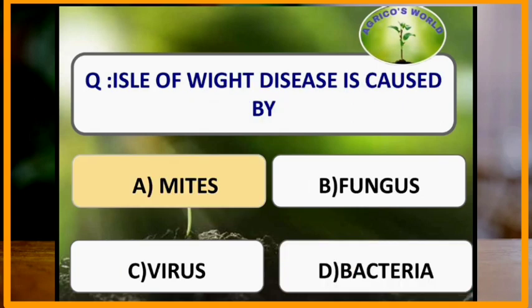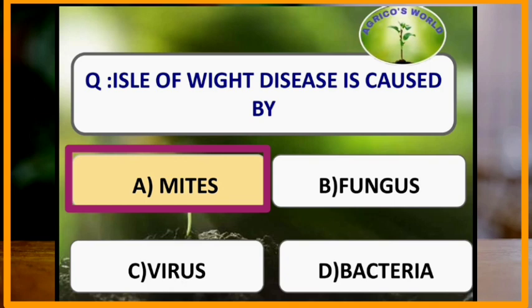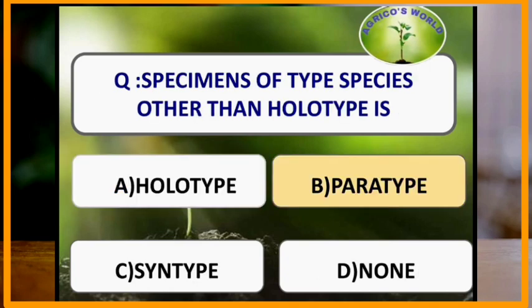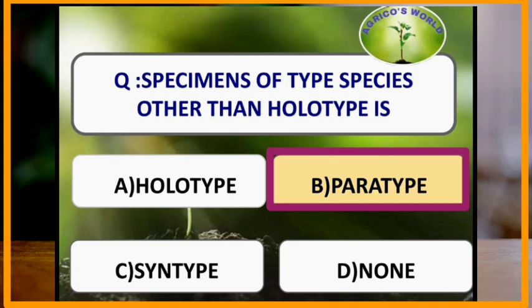Isil of white disease is caused by mites. Specimens of a type series other than the holotype are paratypes. If the description of a new species is made on a single specimen, it is called a holotype; if made on all specimens of the series with no holotype, it is called a syntype.